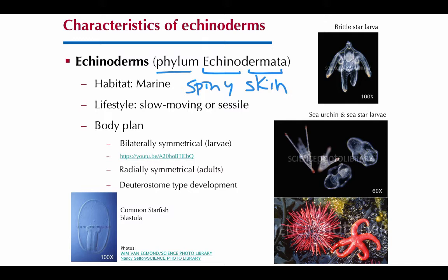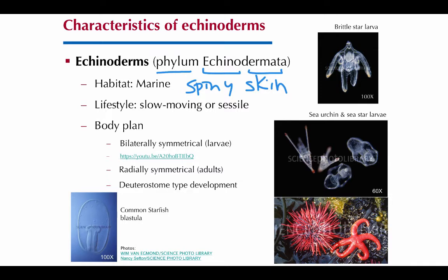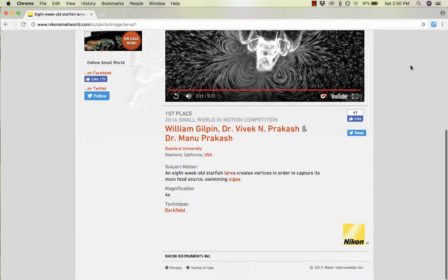Their body plan is interesting. They are in the Bilateria because during larval stages they are bilaterally symmetrical. You can see this very clearly in a brittle star larva — you can split it in only one direction to get two mirror images. Same with the sea urchin larva and the sea star larva. You might be surprised that this kind of larva turns into this kind of adult — they actually undergo metamorphosis and become radially symmetrical. With the sea star you could cut it in many planes and make mirror images — that's radial symmetry.